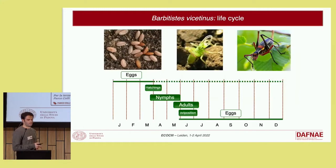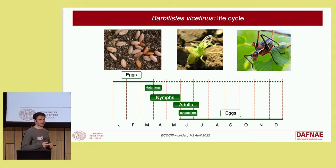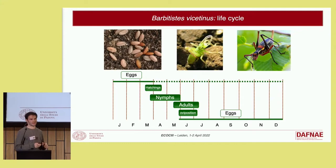I want to focus on the life cycle of this species, because it is very different compared to other species. The nymphs appear at the end of March, and the adults start to lay eggs in the ground throughout June. An egg can hatch in the year following deposition, or it can remain in the soil for several years before resuming development. We have demonstrated that an egg of Barbitistus vicetinus can stay in the ground for at least three years before hatching.